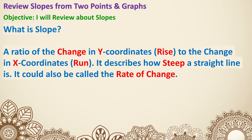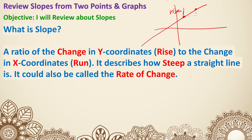Slope is a ratio. It's a rate of change in y coordinates, which a lot of times we will say it is the rise. So if we have a graph with a line, it's the change in the y coordinates — that's the rise — over the x coordinate, the change in x coordinate, which is the run. So that's why when we say the slope, we say it is rise over run, but we can also say it as change in y over change in x.